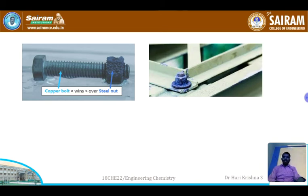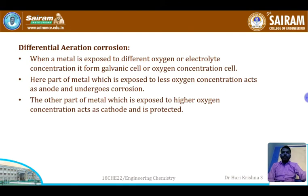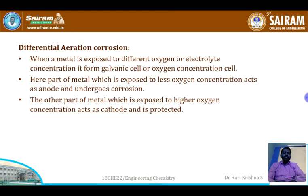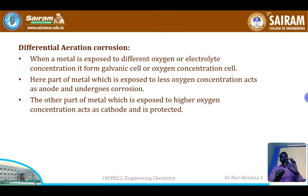Next, differential aeration corrosion. As the name indicates, differential aeration involves a single metal. When a metal is exposed to different oxygen concentrations or electrolyte, it forms a galvanic cell or oxygen concentration cell where corrosion is initiated. The part of the metal exposed to lesser oxygen concentration acts as anode and undergoes corrosion, while the part exposed to higher oxygen concentration acts as cathode and is protected.